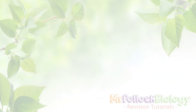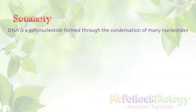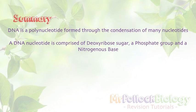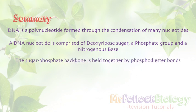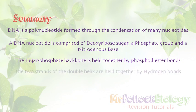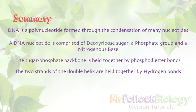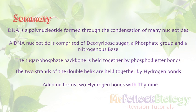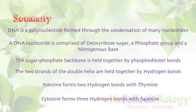So let's summarise. DNA is a polynucleotide formed through the condensation of many nucleotides. Each nucleotide is made up of a deoxyribose sugar, a phosphate group, and one of four nitrogenous bases. The sugar-phosphate backbone is held together by strong phosphodiester bonds formed during the condensation reaction. The two strands of the double helix are held together by hydrogen bonds between complementary base pairs: adenine forms two hydrogen bonds with thymine — A and T makes two — and cytosine forms three hydrogen bonds with guanine — G and C makes three.